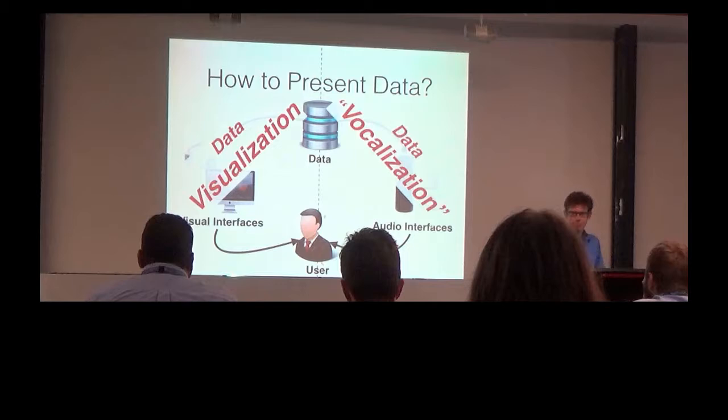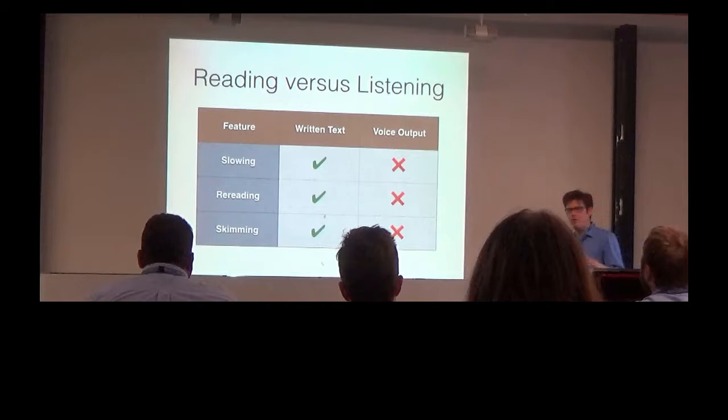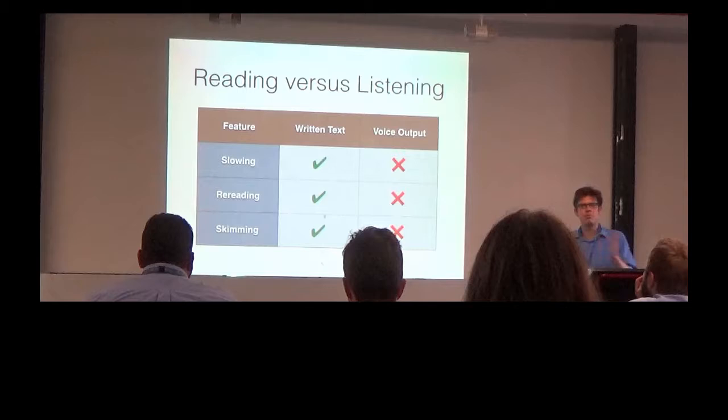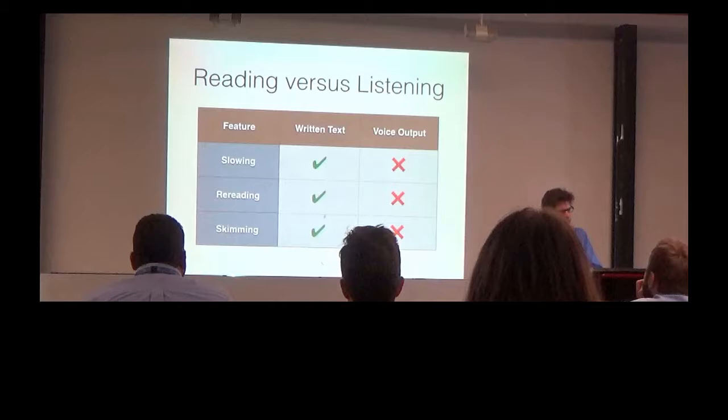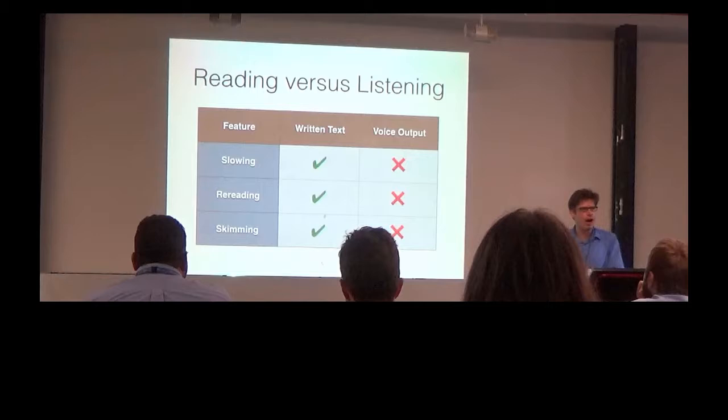Now, voice output is specific for many reasons. If you compare, for instance, reading a written text versus listening to voice output, then there are several important differences. For instance, if you read a written text, you can easily adapt the reading speed once you encounter a complex passage. But the same is typically not possible for voice output where the reading speed is fixed. Also, when reading text, you can easily jump back with your eyes and reread the preceding passage or even the preceding headline, in case you have forgotten some context that is necessary in order to understand the current passage.